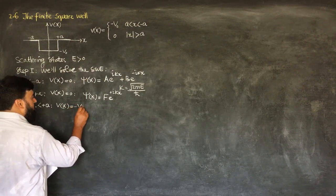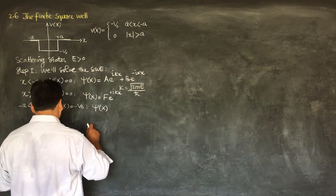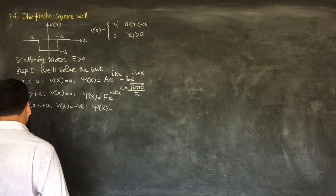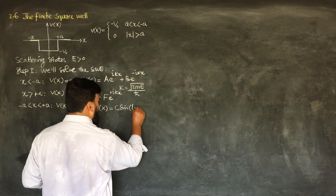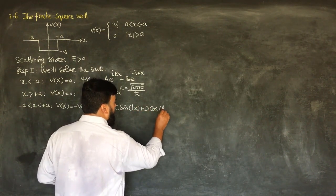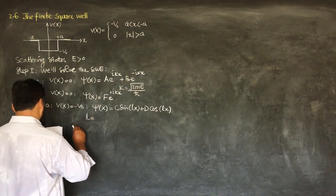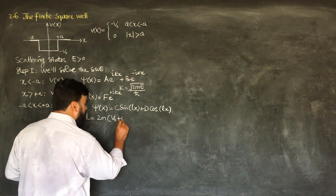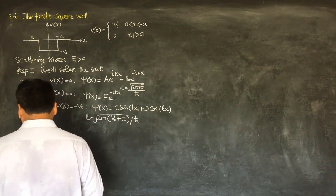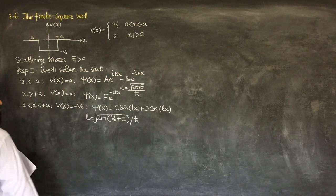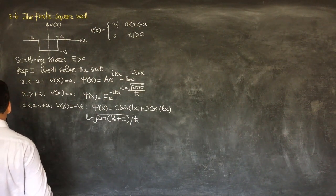Similarly, when x is between plus and minus a, the potential equals −V₀. This gives us the solution ψ(x) = C sin(lx) + D cos(lx), where l = √(2m(V₀ + E)) / ℏ. We write it in this form to apply boundary conditions more easily.